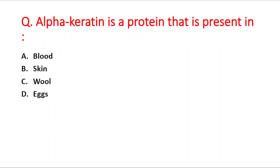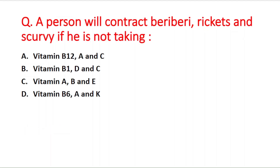Next question: alpha carotene is a protein present in — option A blood, B skin, C wool, D eggs. The right answer is option B — skin. Next question: a person will contract beriberi, rickets, and scurvy if not taking — option A vitamin A and C; B vitamin B1, D, and C; C vitamin A, B, and E; D vitamin B6, A, and K.